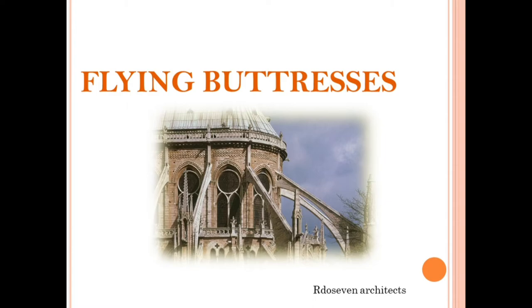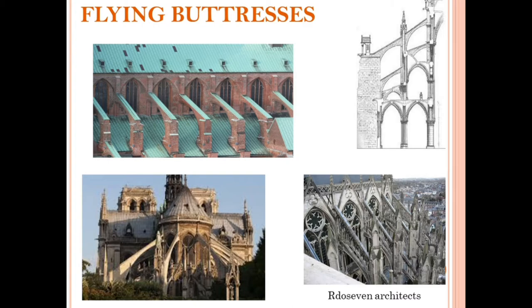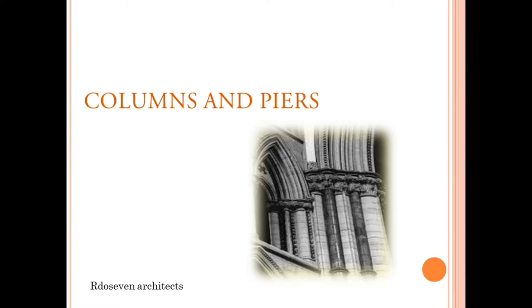Flying buttresses are an important feature of Gothic architecture. The buttresses were placed on the roof on either side of the building. These flying buttresses were used for both decorative and practical purposes, carrying the load of the roof. The buttresses had existed since Roman times, and had arches rising from free-standing piers.